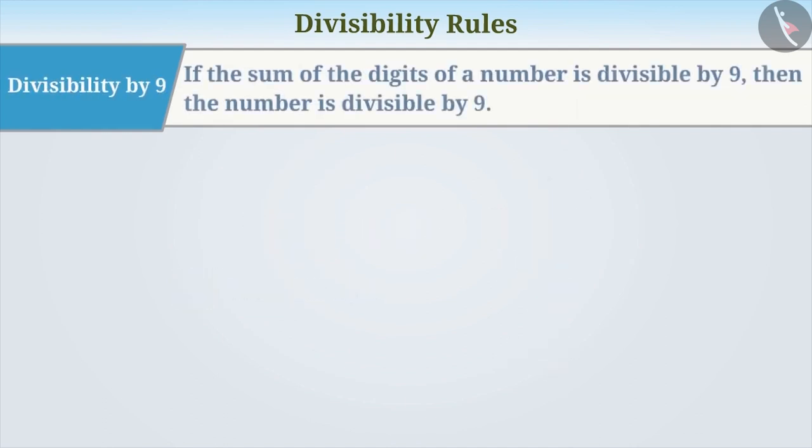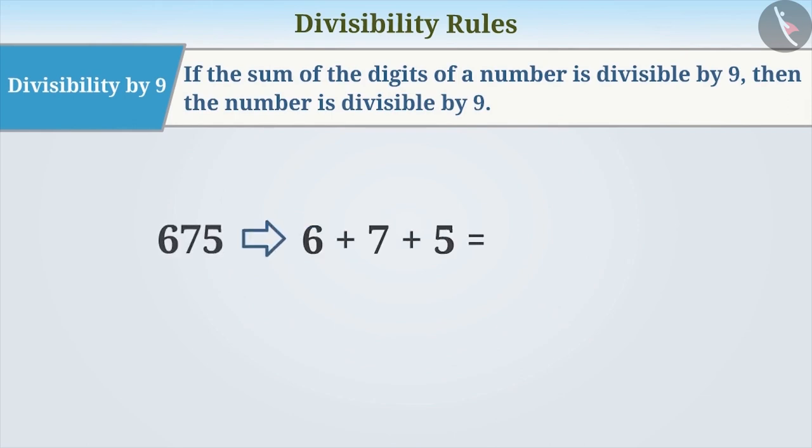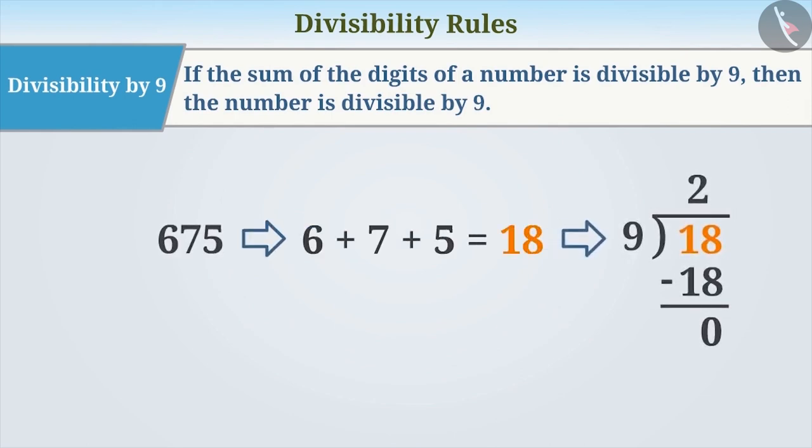Divisibility by 9: If the sum of the digits of a number is divisible by 9, then the number is divisible by 9.